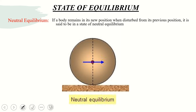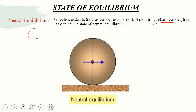Next, we have neutral equilibrium. If a body remains in its new position when disturbed from its previous position, that body is said to be in a state of neutral equilibrium. As it relates to the center of gravity, for neutral equilibrium, the center of gravity remains at the same level.